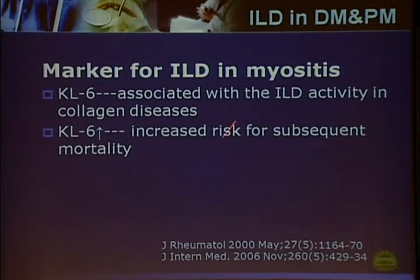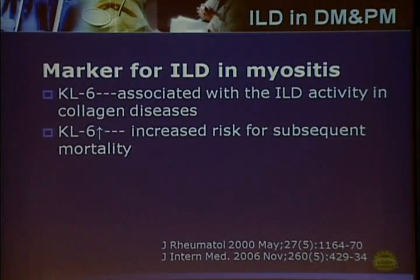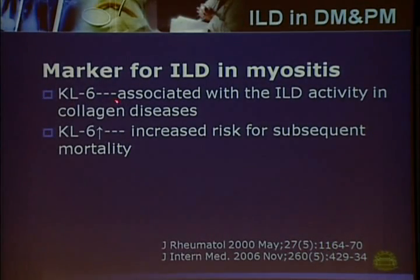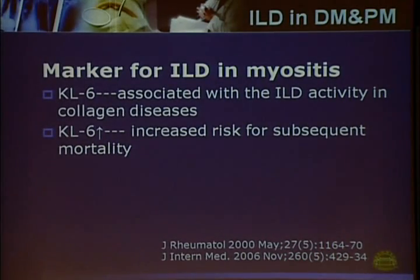Some biomarkers can be used for ILD in myositis patients. KL-6 is a mucin-like glycoprotein mainly secreted by type 2 alveolar pneumocytes or epithelial cells. KL-6 is associated with ILD activity in collagen diseases, and increased levels of KL-6 put patients at increased risk for subsequent deterioration.